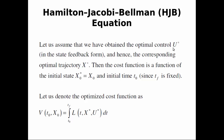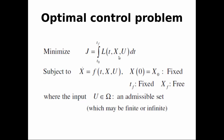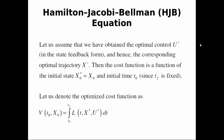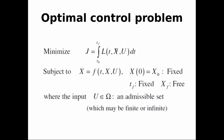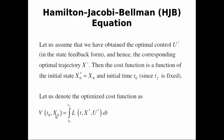We assume u* is the optimal control that minimizes the performance index J. If we apply u* to the system, we obtain x*. The resulting cost function would be a function of the initial state and initial time, which we call V — the optimal cost function.